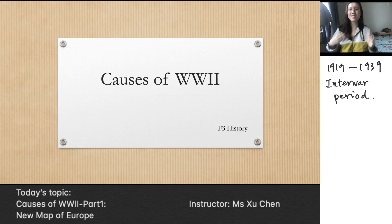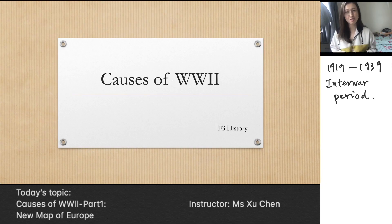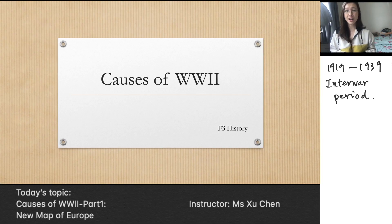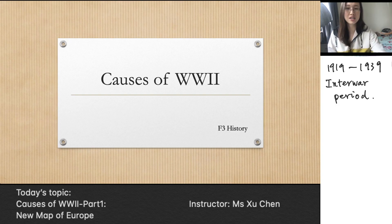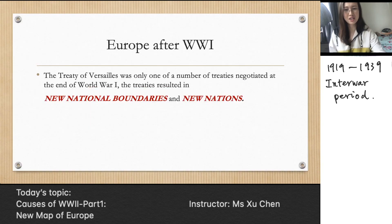Firstly, we're going to continue to talk about the arrangement of the First World War. Last term we talked a little about the Paris Peace Conference, the Big Three, and the Treaty of Versailles. But you have to know Germany was not the only country who fought in their camp during the First World War — they also had other allies: Austria-Hungary, the Ottoman Empire, and Bulgaria. So the Treaty of Versailles is not the only treaty signed after the First World War — they signed different treaties with different countries depending on their involvement.